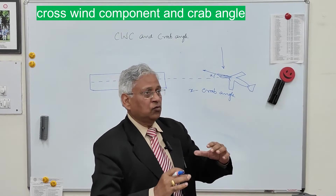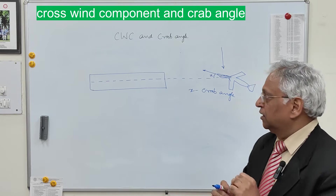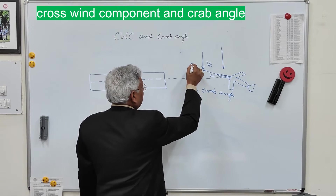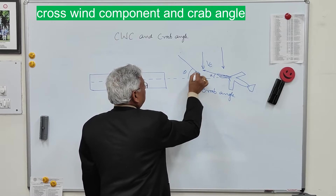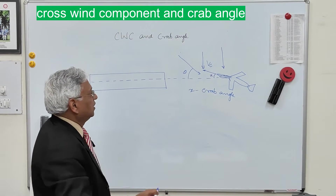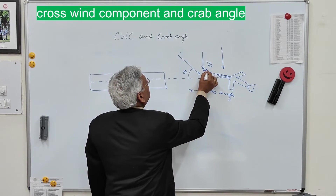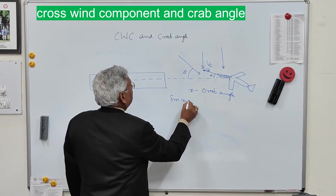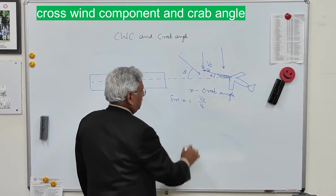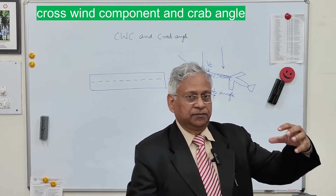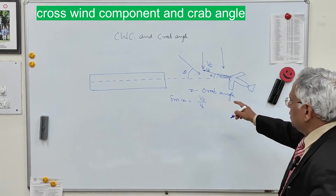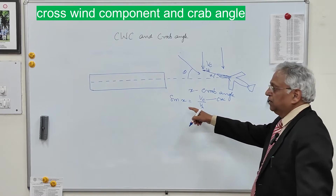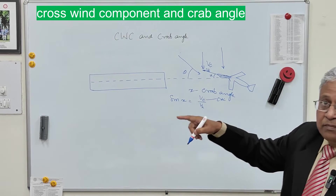The crab angle is made by the aircraft to counter the effect of the crosswind component. If the crosswind component is VC (equal to V sin theta) and the heading speed of the aircraft is Vh, then sin x equals VC divided by Vh. So the larger the crosswind component, the greater the crab angle x — that is the importance of the crosswind component.